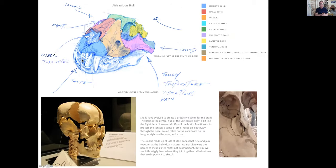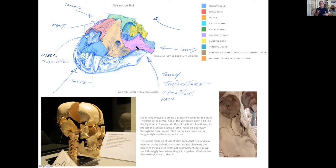It's a good way to explore the skull by thinking about the senses. Skulls have evolved to be a protective cavity for the brain — the central hub of the vertebrate body, a bit like the flight deck of an aircraft. It processes all information and is where we think and feel. It's also important as a place where we process the senses of the external world: taste goes into the mouth, smell into the nose, eyesight into the eye sockets, and touch, temperature, vibrations, and pain going through the foramen magnum — the large hole at the base of the skull.